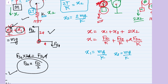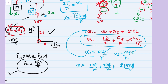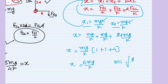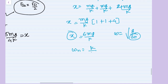Substituting all values: x equals mg over k plus mg over k plus 2 times 2mg over k, giving x equals mg over k times (1 plus 1 plus 4) equals 6mg over k. This is the static deflection. The natural frequency is omega equals the square root of g over delta static, which gives omega equals the square root of k over 6m. That is the natural frequency formula for the pulley system.